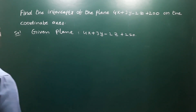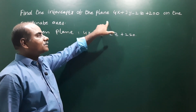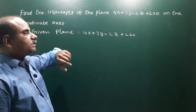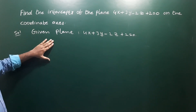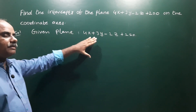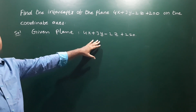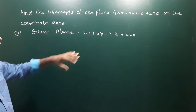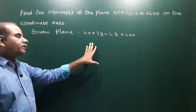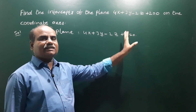The next problem: find the intercepts of the plane 4x plus 3y minus 2z plus 2 equals 0 on the coordinate axes. We use the coordinate axis intercept method to find the intercepts.